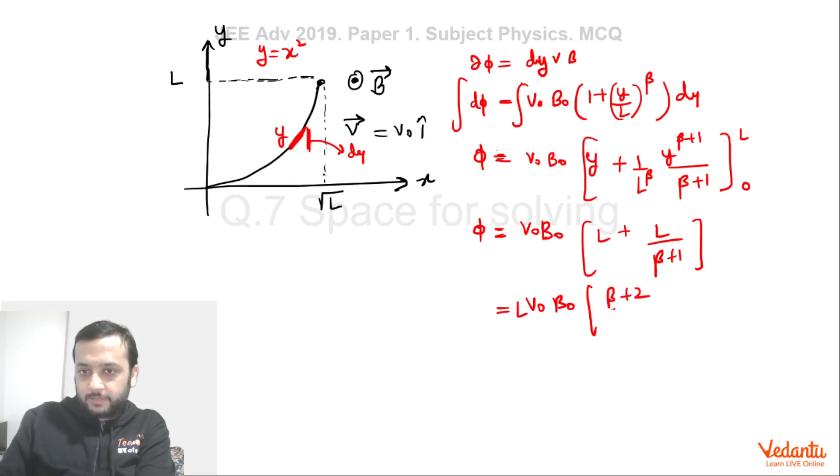And in this whole thing we are going to put the limit 0 to L. The phi value that we are getting is v₀B₀. If you put L so this becomes L plus L to the power β+1 by L to the power β. So that will become L upon β+1. And if you put 0 then anyway it is going to become 0. This becomes v₀B₀L and this will become β+1+1. So β+2 divided by β+1. This is what we get. This is the induced EMF.